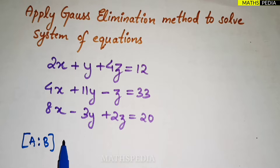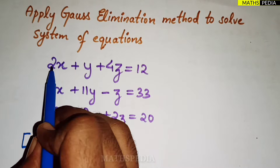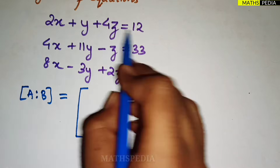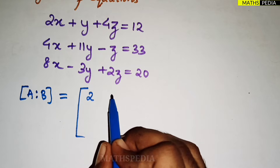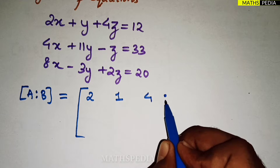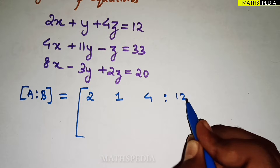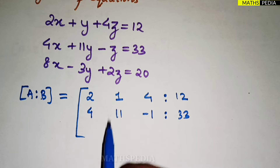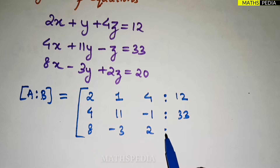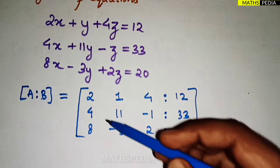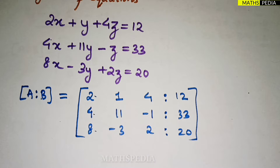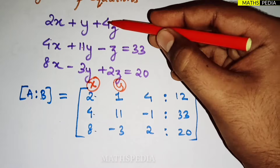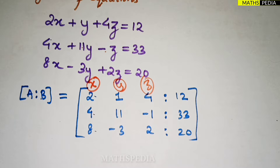Now we have to form the augmented matrix A. It is simple to form — you just write the coefficients of the equations. For the first equation, the x coefficient is 2, y coefficient is 1, z coefficient is 4, and b (the constant term) is 12. Second equation: 4, 11, minus 1, and 33. Third equation: 8, minus 3, 2, and 20. You can observe column-wise: 2, 4, 8 are x coefficients; 1, 11, minus 3 are y coefficients; 4, minus 1, 2 are z coefficients.